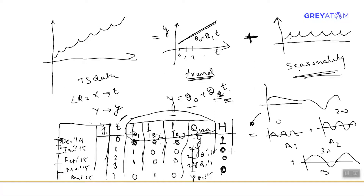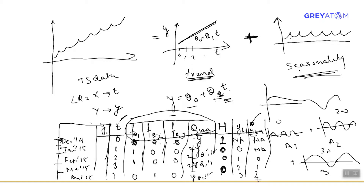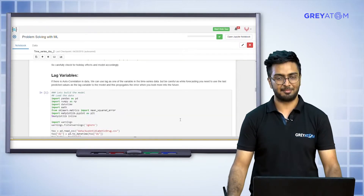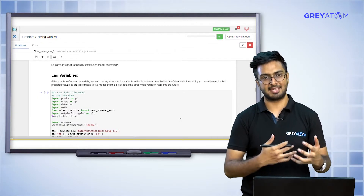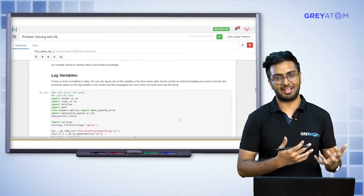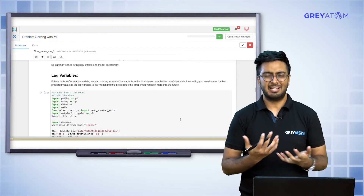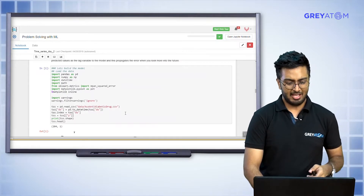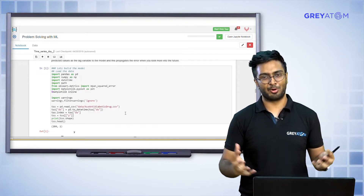Adding a lag variable basically means adding a feature y(t-1) — the value at the previous time step. The first value is not applicable, it's NA. You can also have y(t-2), where the first two values are NA and then it starts with the earlier values: 0, 1, 2, 3. Lag features lag the time series by one step, two steps, three steps — you can take as many lag features as you want: lag-1, lag-2, lag-3, lag-4, absolutely up to you.